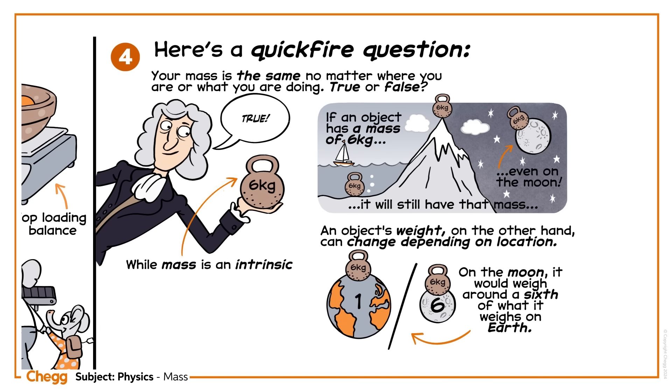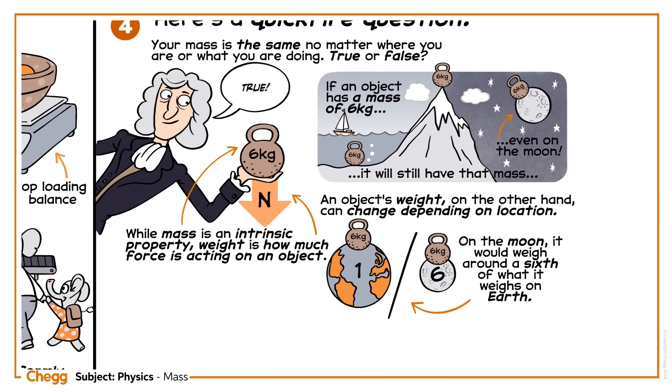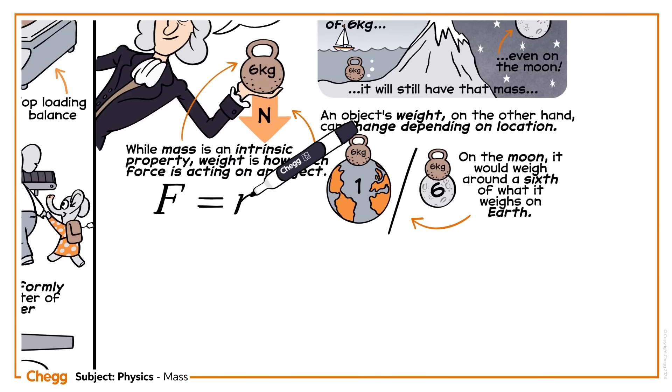While mass is an intrinsic property, weight is how much force is acting on an object, measured in newtons. Weight depends on gravity. It equals mass times the acceleration due to gravity. F equals mg.